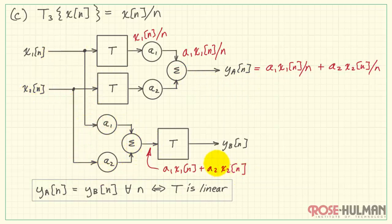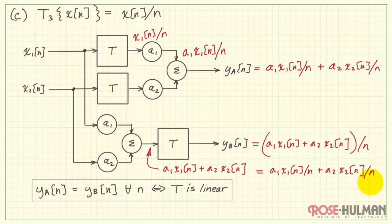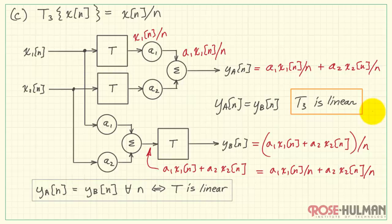Now the N can be distributed across the sum. And we see that this expression is identical to that expression. And system T3 is linear. Well, that wraps it up for this example.